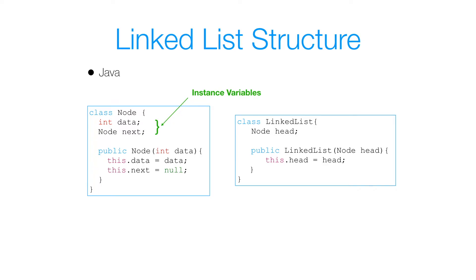Then I have my constructor. My constructor takes in an argument's data and initializes my instance variable data with that argument's data. I also initialize my next to null, regardless if it was initialized before or not.